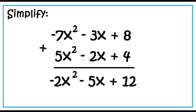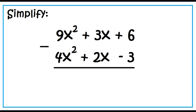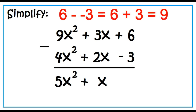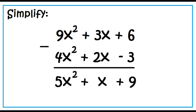Simplify: the quantity 9x squared plus 3x plus 6, minus the quantity 4x squared plus 2x minus 3. 9x squared minus 4x squared is 5x squared; 3x minus 2x is x; 6 minus negative 3 is 9. The answer is 5x squared plus x plus 9.